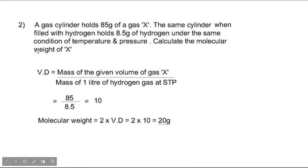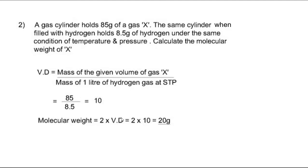Problem 2: A gas cylinder holds 85 grams of a gas X. The same cylinder when filled with hydrogen holds 8.5 grams of hydrogen under the same conditions of temperature and pressure. Calculate the molecular weight of X. Vapor density = 85 / 8.5 = 10. Molecular weight = 2 × vapor density = 2 × 10 = 20 grams.